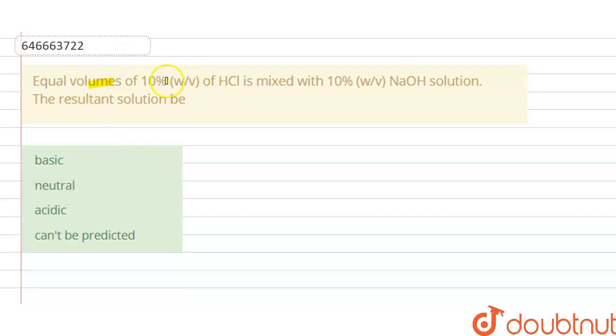equal volumes of 10% weight by volume of HCl is mixed with 10% weight by volume NaOH solution. The resultant solution be: basic, neutral, acidic, can't be predicted. So the solution of this question is